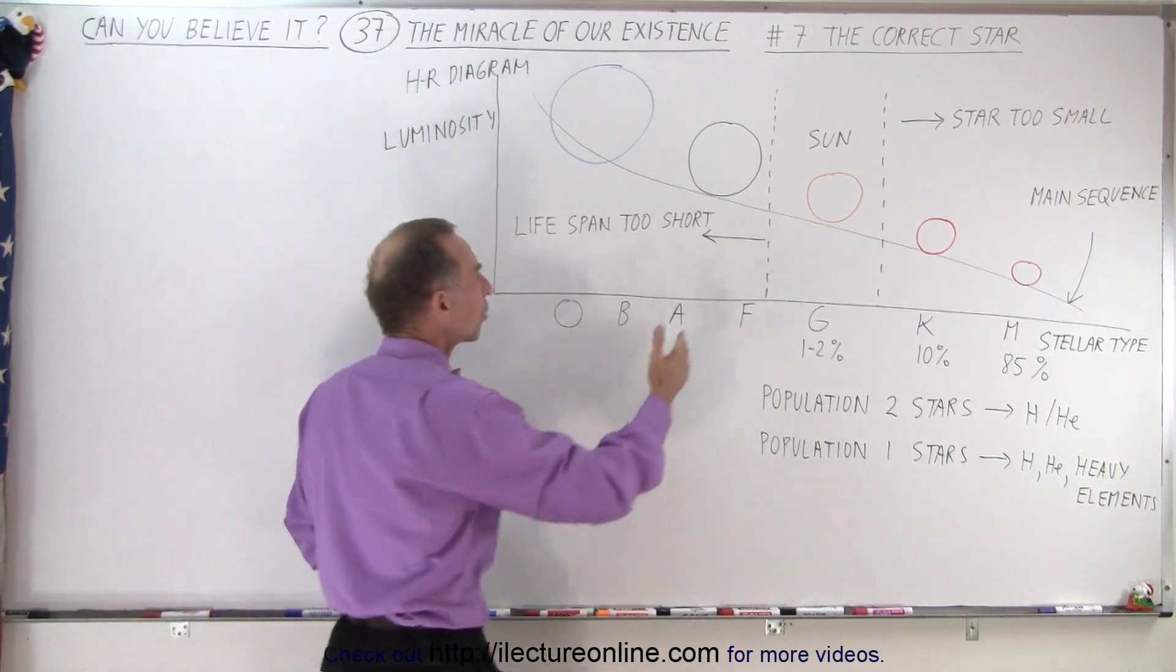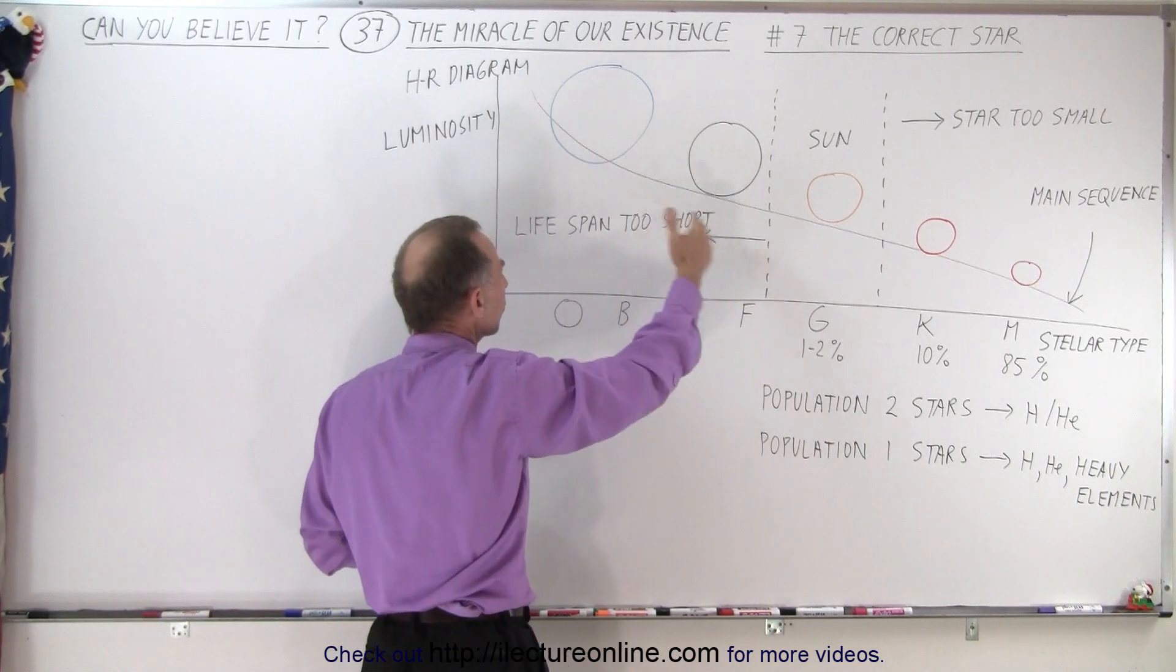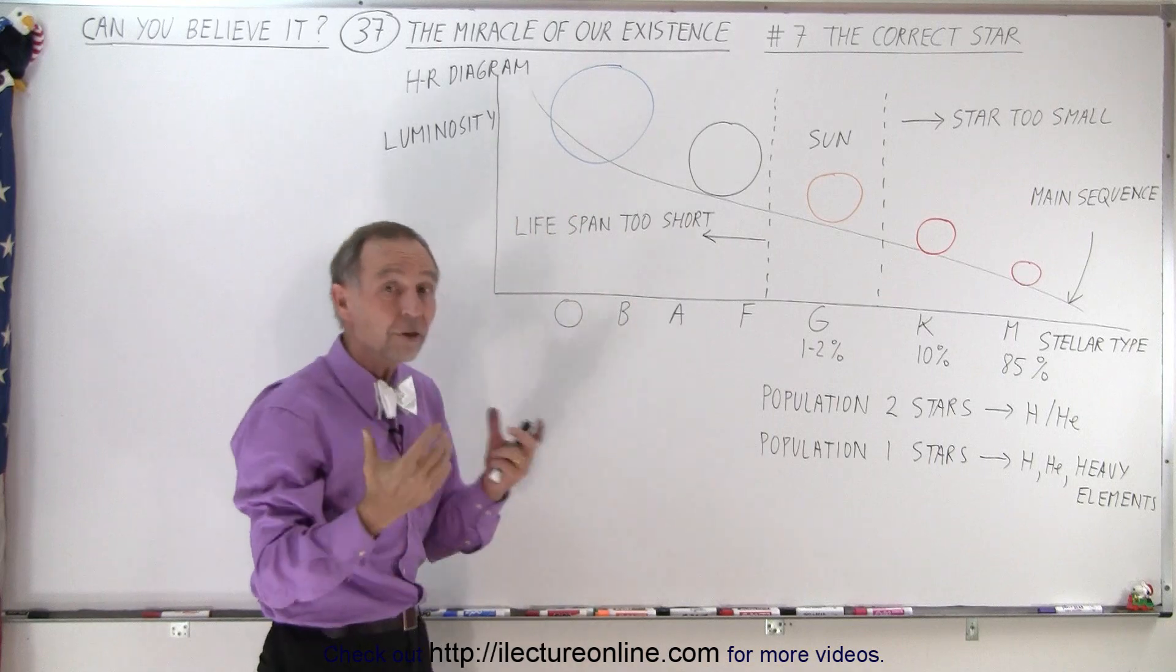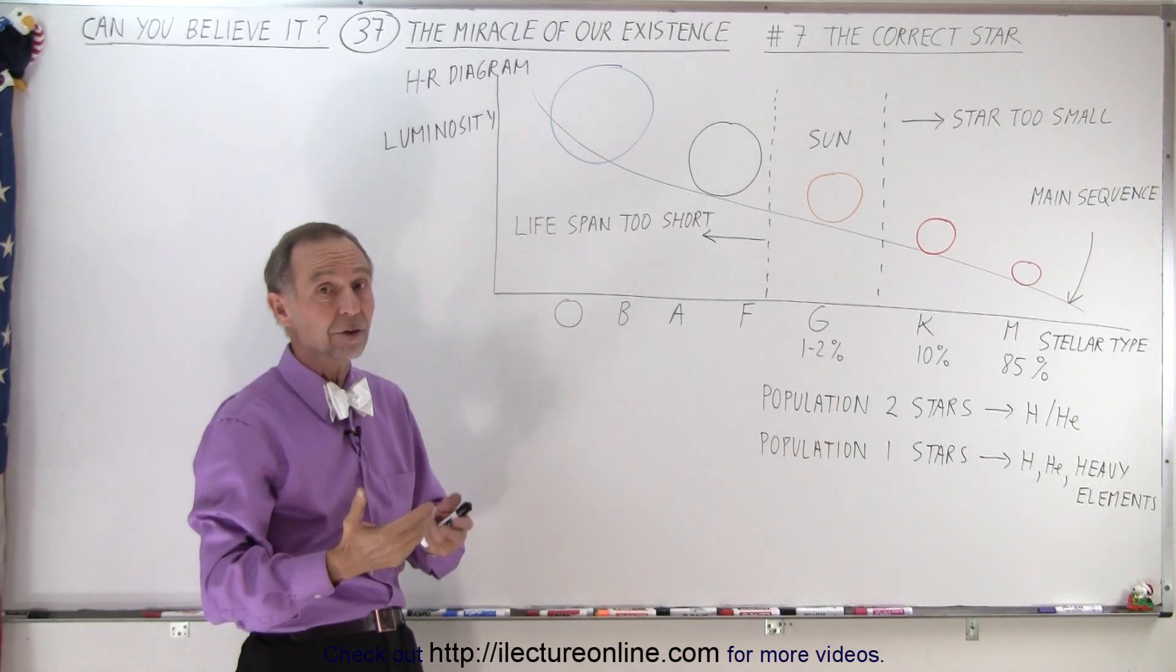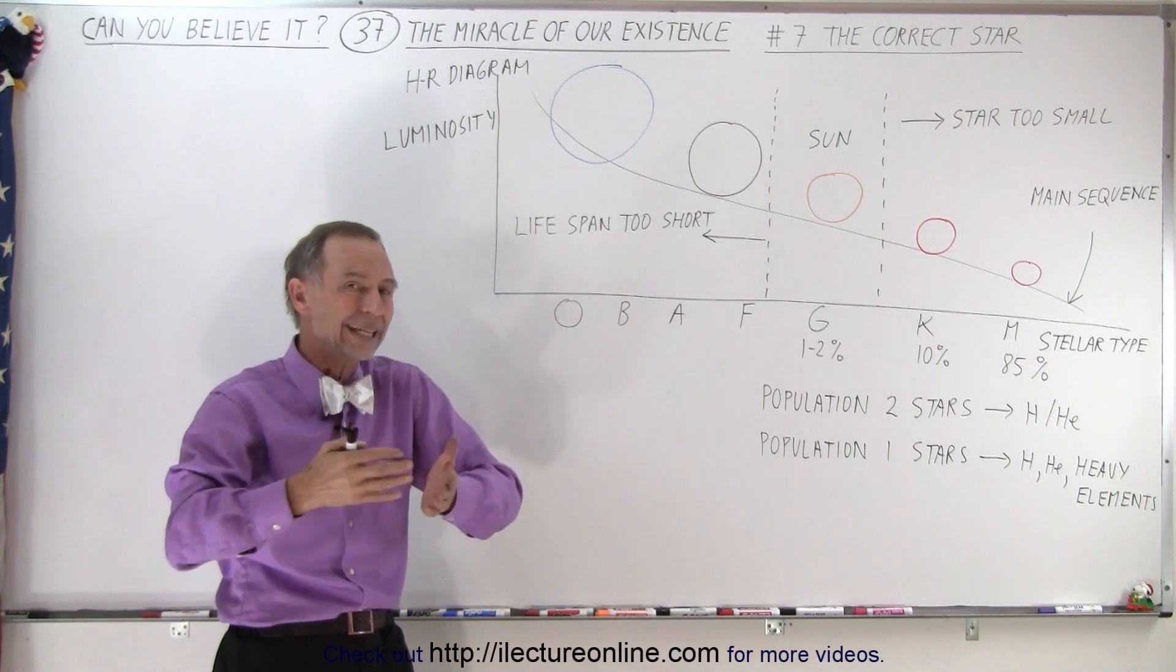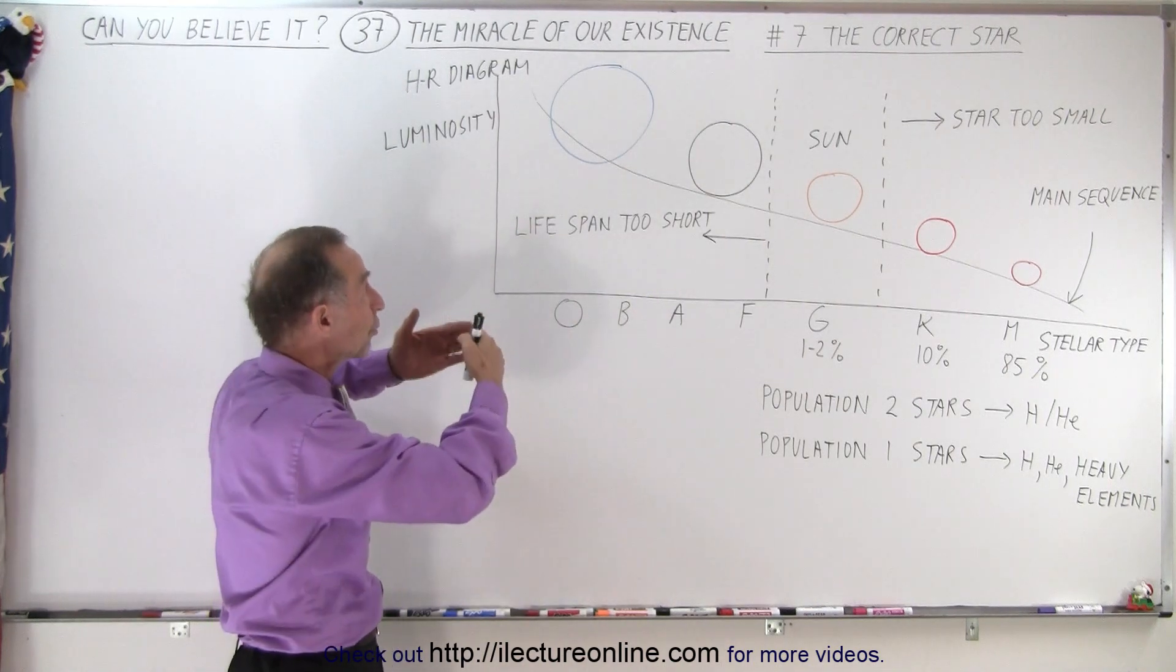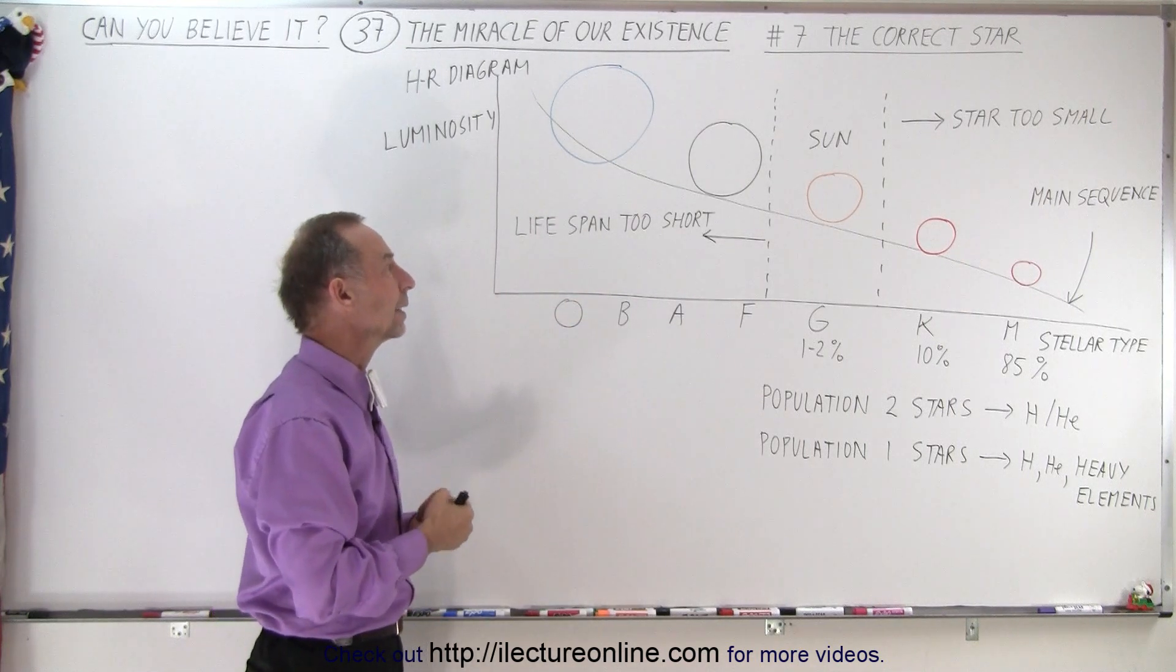Now, planets around stars that are O-B-A-F type, in other words, white or blue stars, the lifespan of these stars is far too short for life to be able to start and exist because those stars will burn up their hydrogen and turn into helium too fast, and they will turn into red giants far too soon for life to be able to set a hold onto the planet.